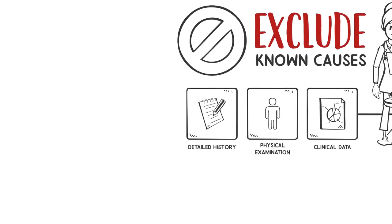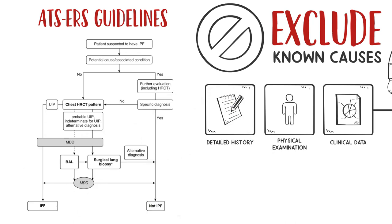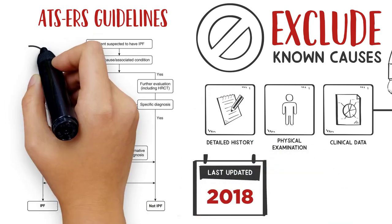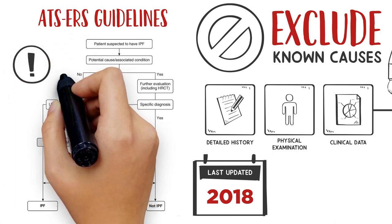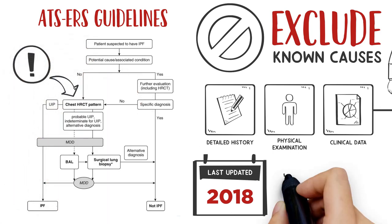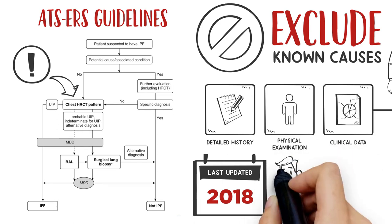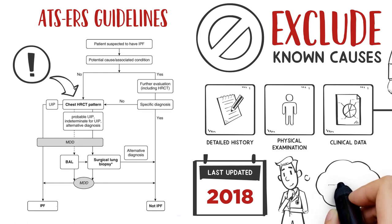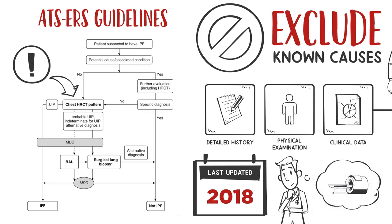The current ATS-ERS guidelines, updated in 2018, remind us of the importance that high-resolution CT scan plays in the diagnostic algorithm. If we can confidently rule out known causes of pulmonary fibrosis, we turn to the high-resolution CT scan as the next step.